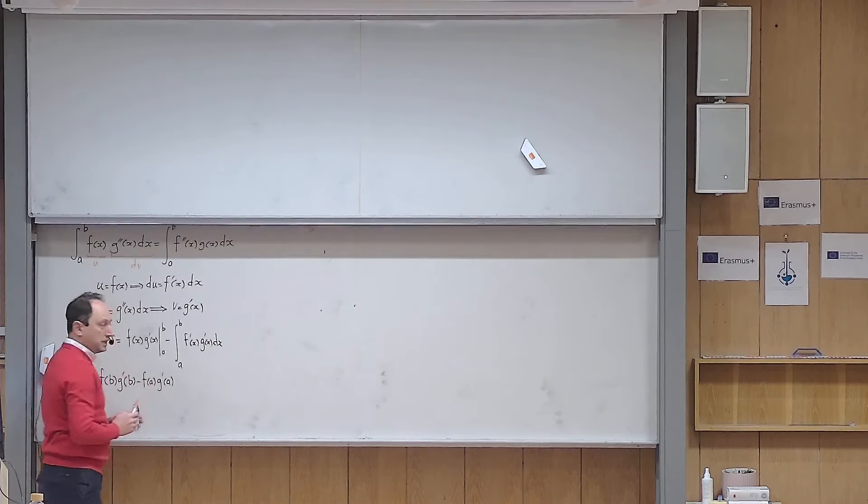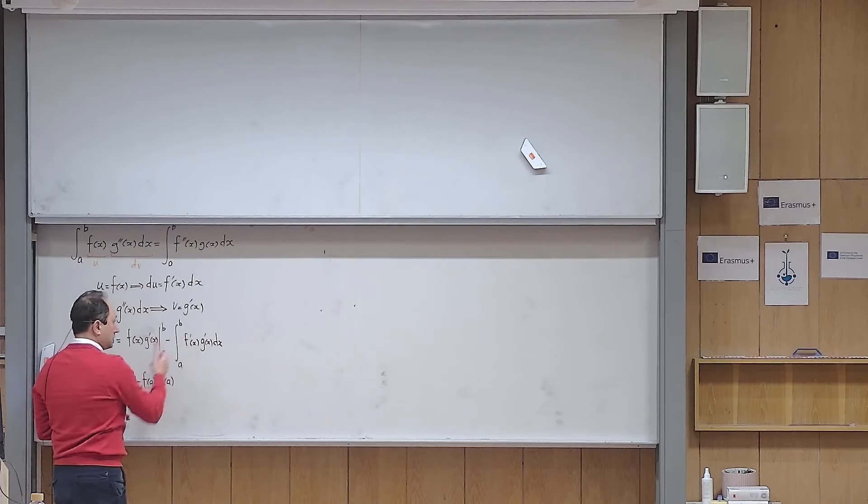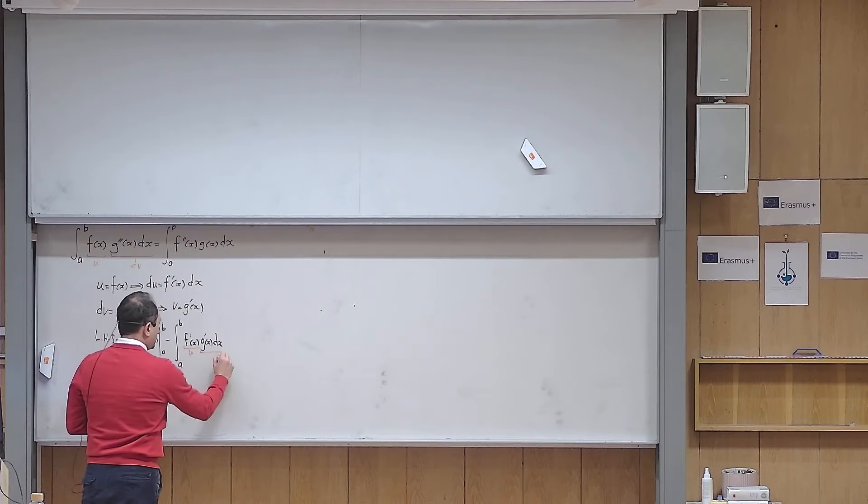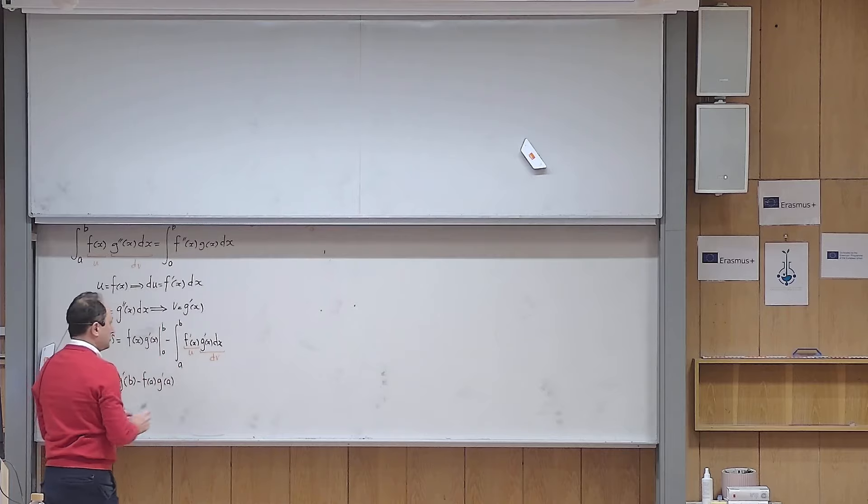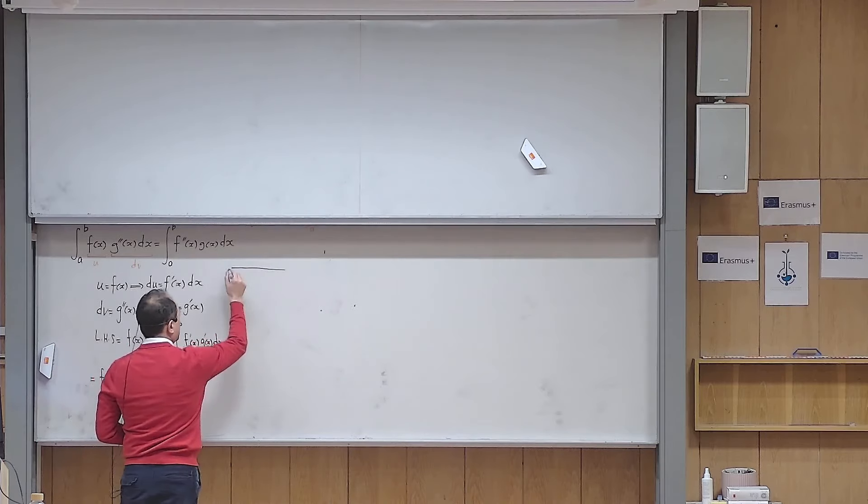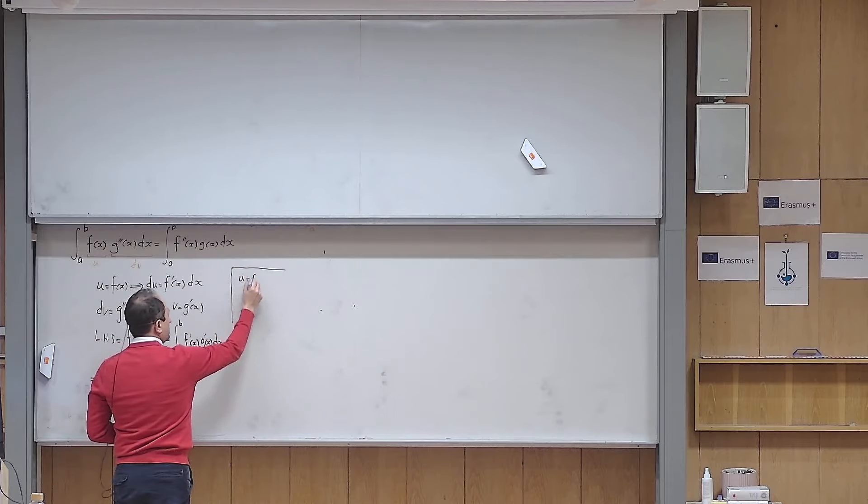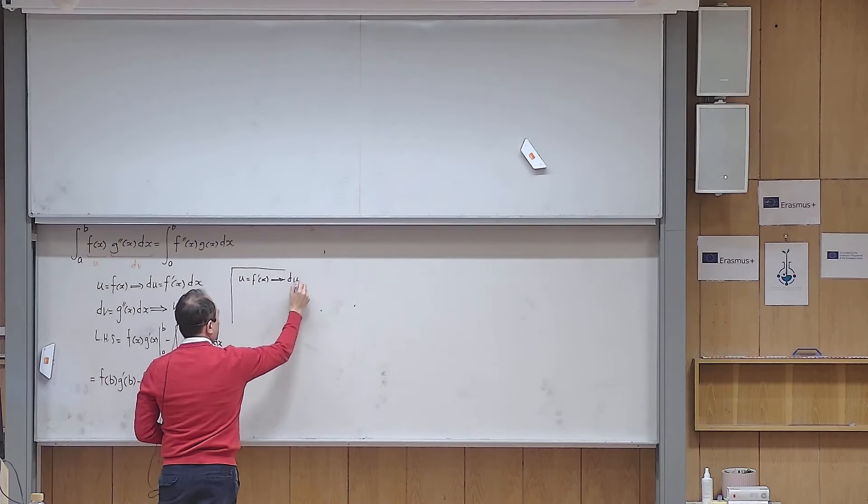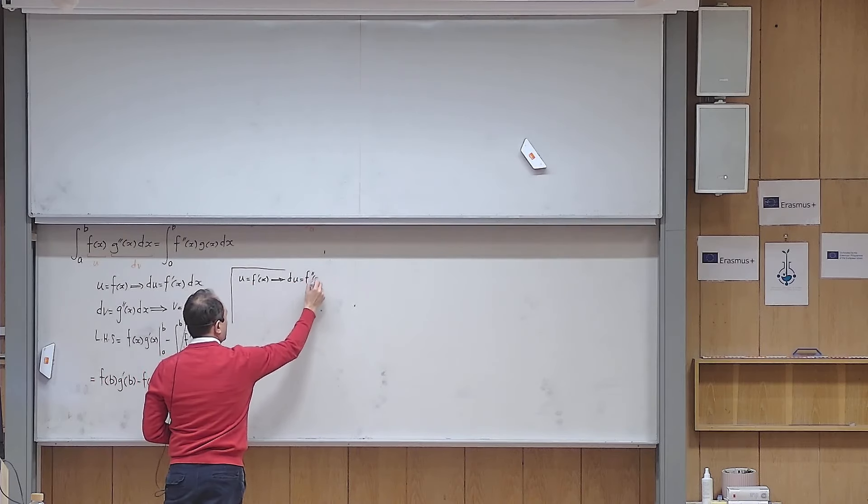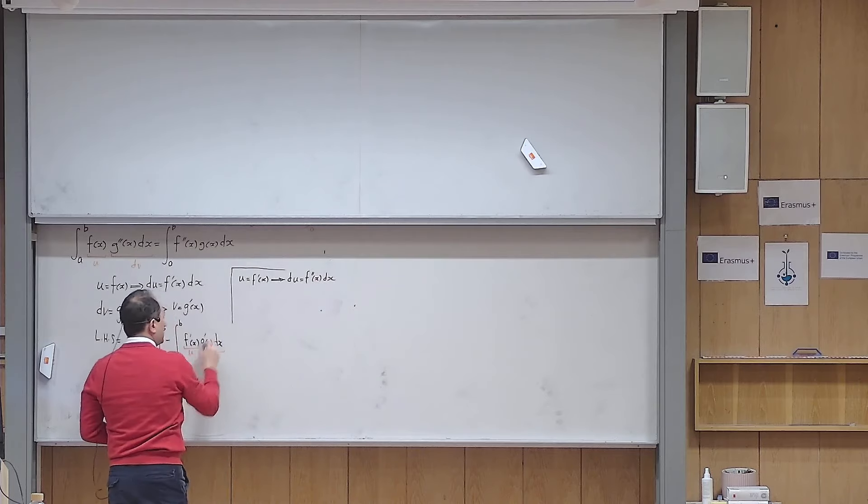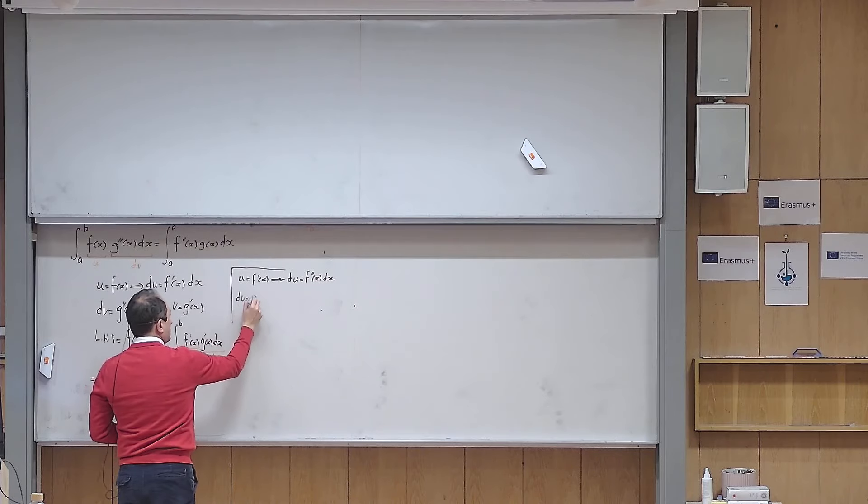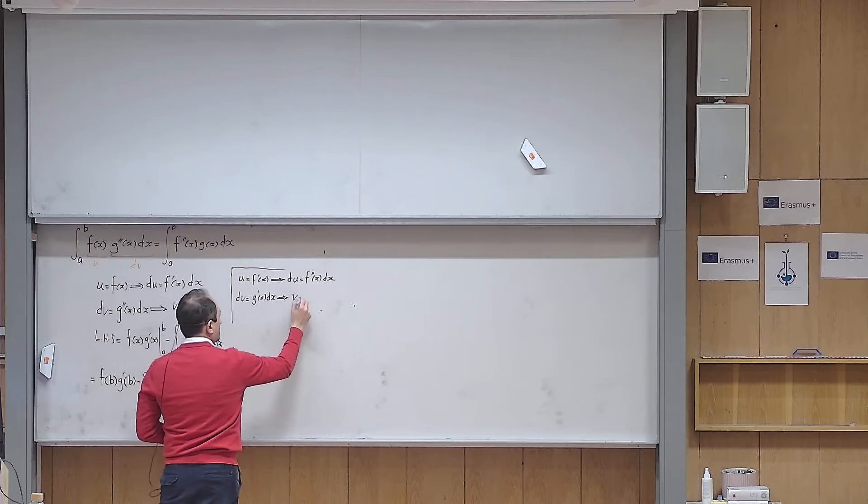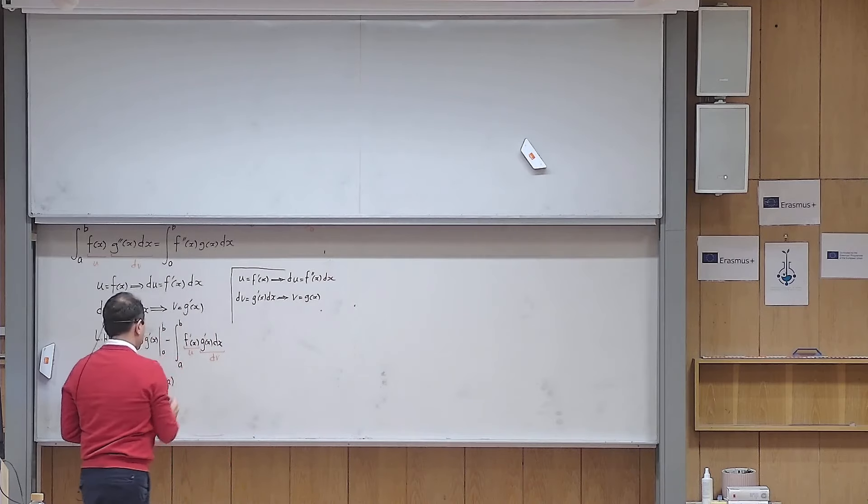And then I want to use integration by parts once more on this new integral. I want to give the role of u to f' and I want to give the role of dv to this. And if you don't mind, let me write what I need here. So u is f'(x). As usual, I need du. So the derivative of f' becomes f''(x) and I multiply it by dx. Then I will say dv equals g'(x)dx. v is a primitive function for g', so v is g(x).